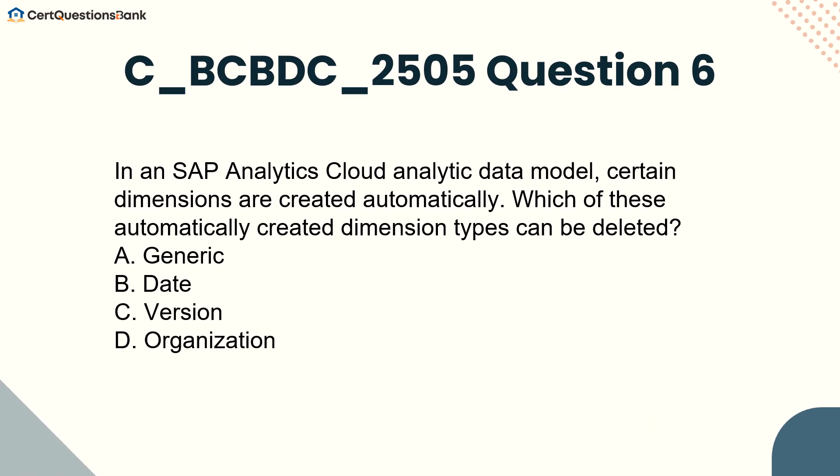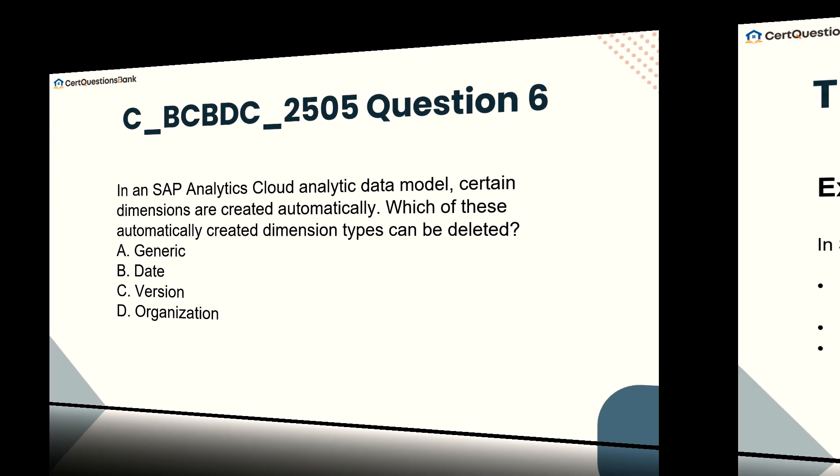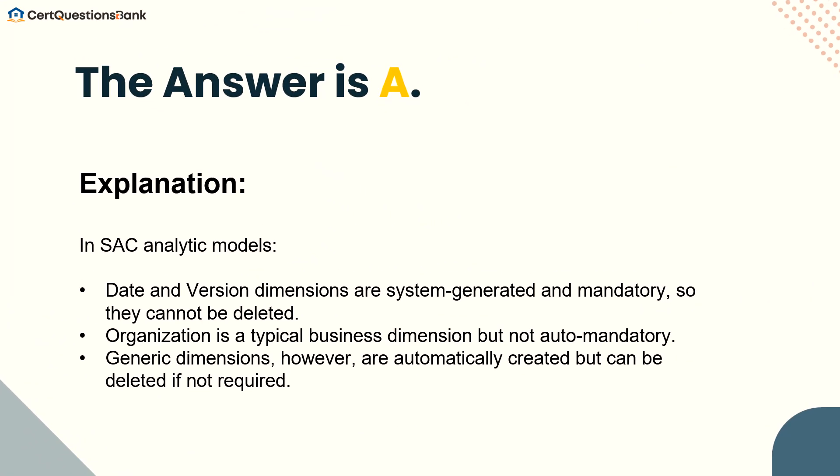In an SAP Analytics Cloud Analytic data model, certain dimensions are created automatically. Which of these automatically created dimension types can be deleted? A. Generic. B. Date. C. Version. D. Organization. The answer is A. Date and version dimensions are system-generated and mandatory, so they cannot be deleted. Organization is a typical business dimension but not auto-mandatory. Generic dimensions, however, are automatically created but can be deleted if not required.